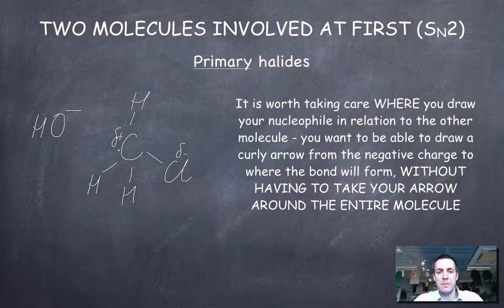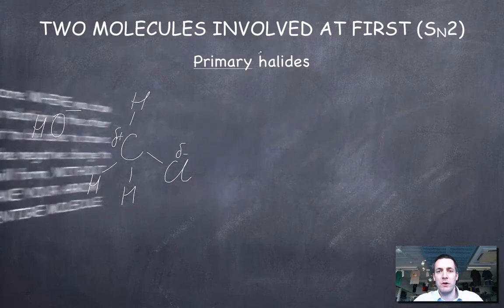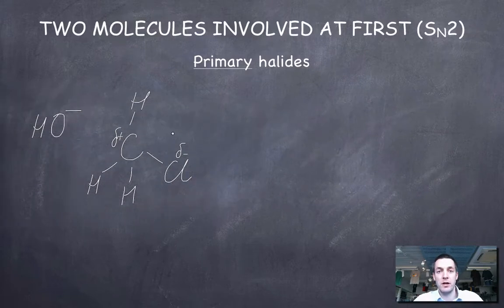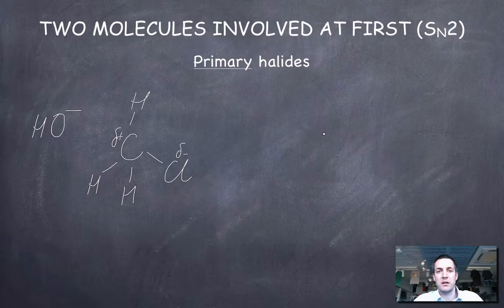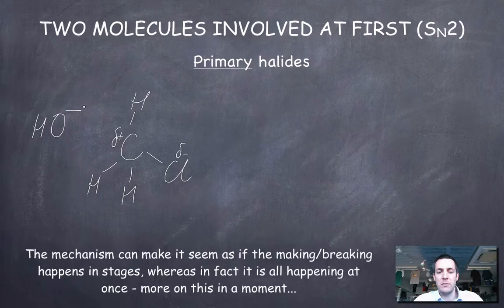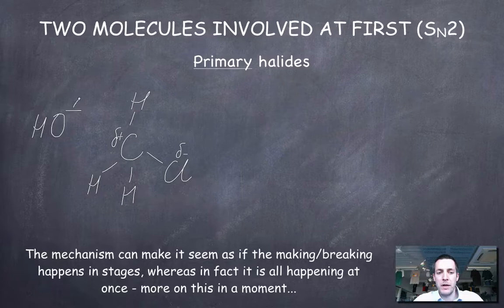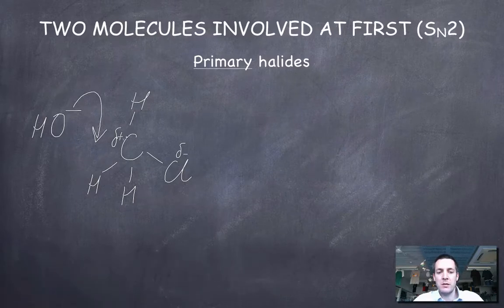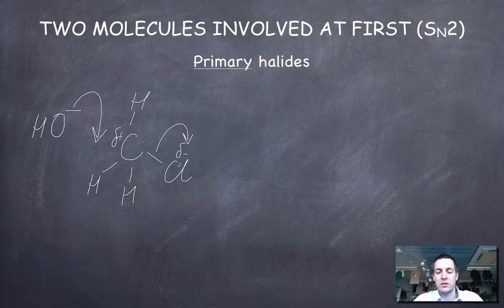The first thing that happens here: both of these molecules are involved in the first step. So in a cartoon, if you like, this is the first slide of the cartoon. And what happens first? Remember we're going to make a bond between the carbon and the oxygen, and this bond is going to break. And in actual fact, this all happens at the same time. How do we show this bond being made? Well, we put the pair of electrons into that space because a bond is a pair of electrons.